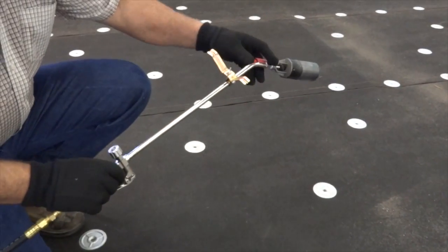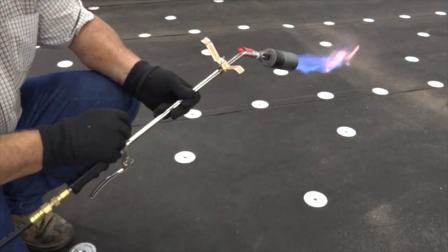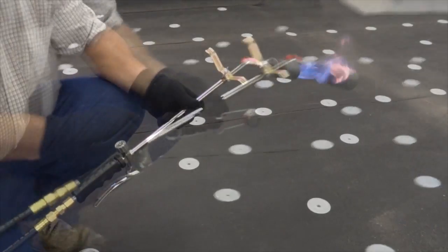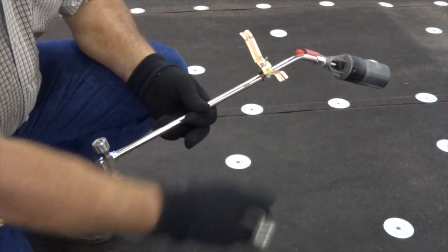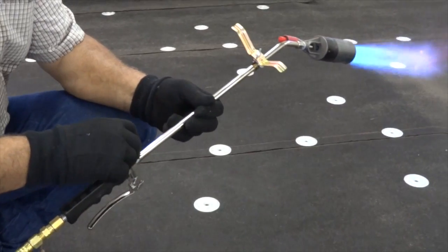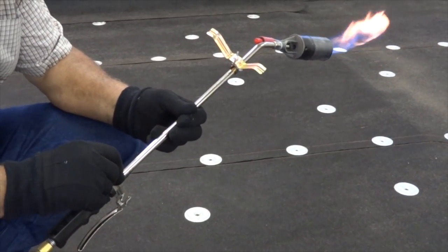When igniting the torch, make sure the torch valve is open to its lowest possible setting and the trigger is not engaged. Some newer model torches are equipped with self-ignition devices, while older models require the use of a spark striker. The striker must be held a safe distance away from the torch head when igniting.